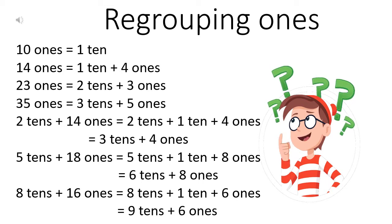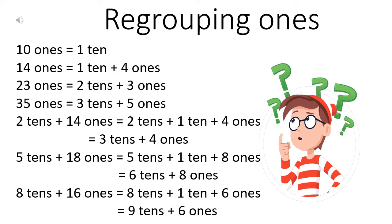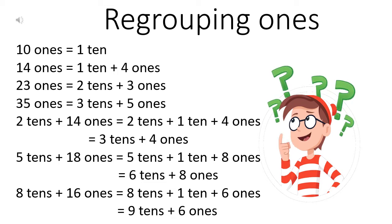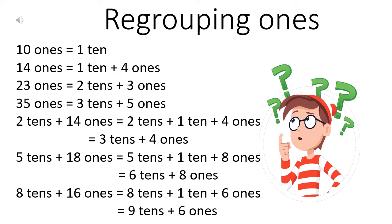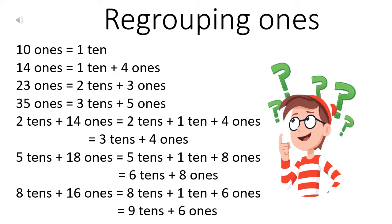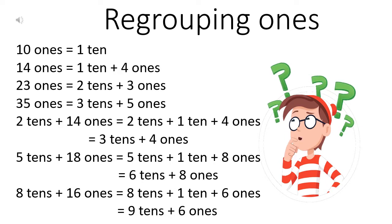Now suppose mama gives you two packets of pencils, each packet having ten pencils, and fourteen loose pencils. So you already have two tens. When you regroup fourteen, you get one ten and four ones. Now if we add them, you get three tens and four ones.